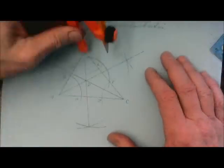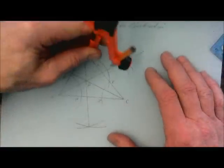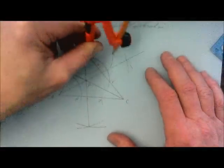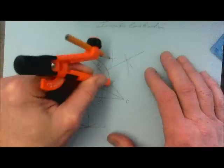So from point P, I swing an arc that intersects AC twice, and then I use those as stop points to create an intersection.